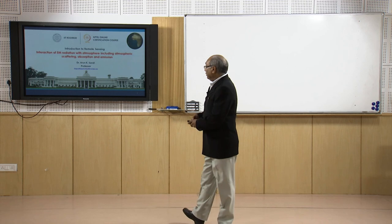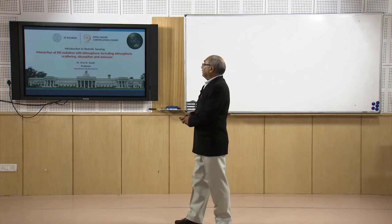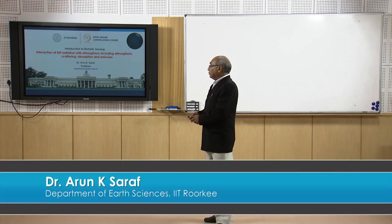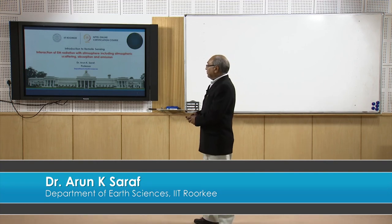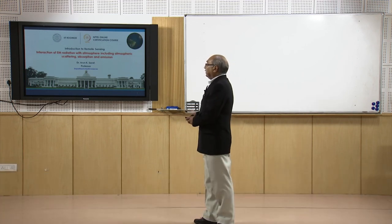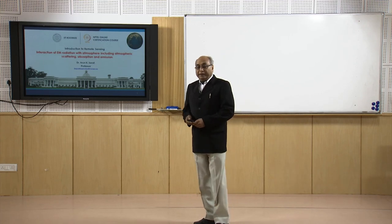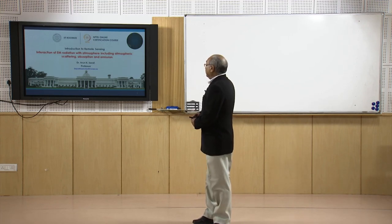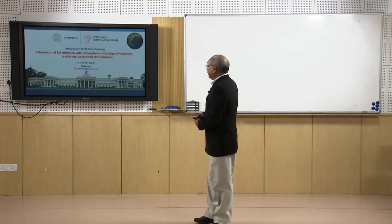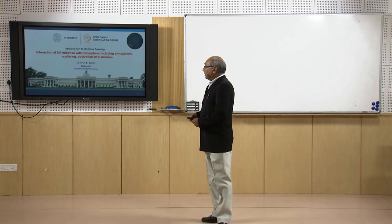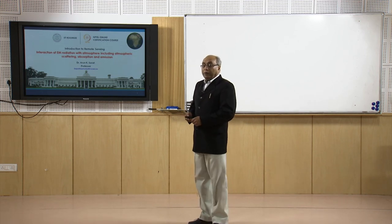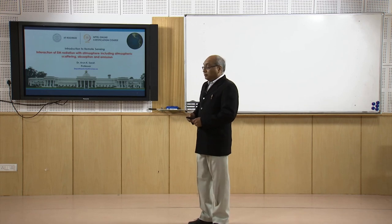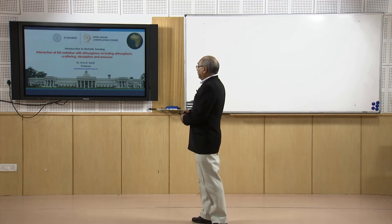Hello everyone and welcome to the fifth lecture in the series of Introduction to Remote Sensing. In this particular lecture, we are going to discuss interaction of electromagnetic radiation with the atmosphere, including scattering, absorption and emission phenomena which really affect our remote sensing satellite-based images.